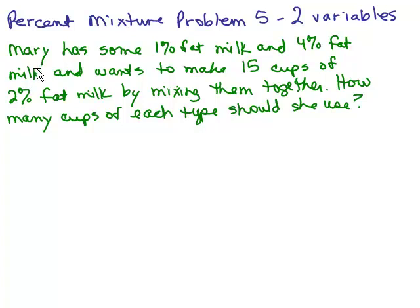Here's the problem. Mary has some 1% fat milk which is usually called that super low fat milk and some 4% fat milk, that's usually the regular milk, the whole milk, and wants to make 15 cups of 2% fat milk, that's the usual low fat, by mixing them together. So I want to mix some of this 1% and 4% fat milk together and end up with 15 cups total which is 2% fat milk. How many cups of each type should she use?